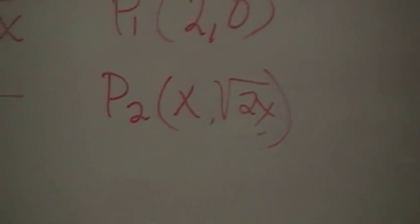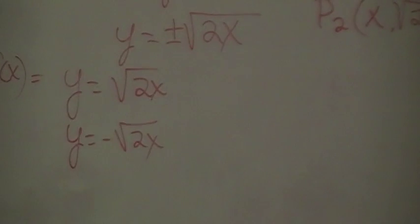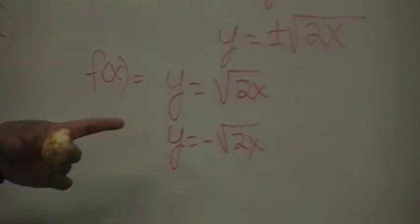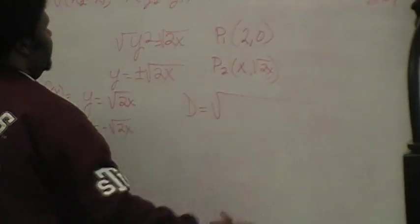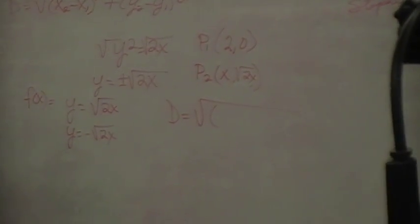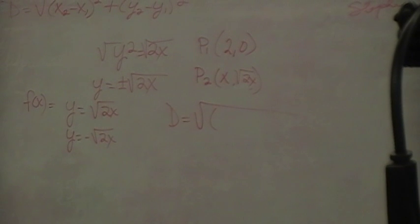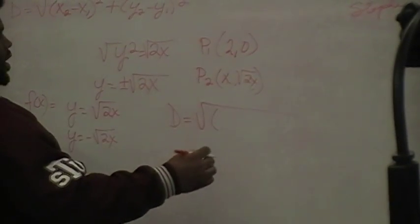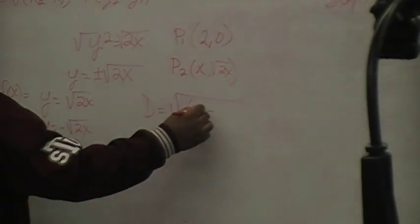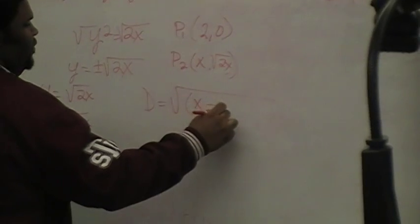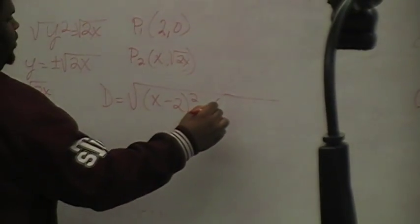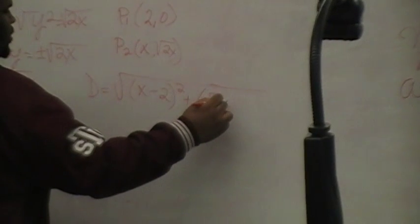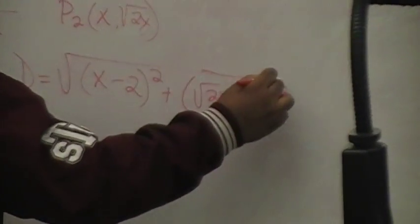So when I go to plug this into the distance formula, what would I have? We're going to look at just the top one first. D equals the square root of — what's the X value of the second point? Some X value we're looking for. So X minus 2, that was the X value of the first one, squared, plus — in parentheses — the square root of 2X minus 0, squared.